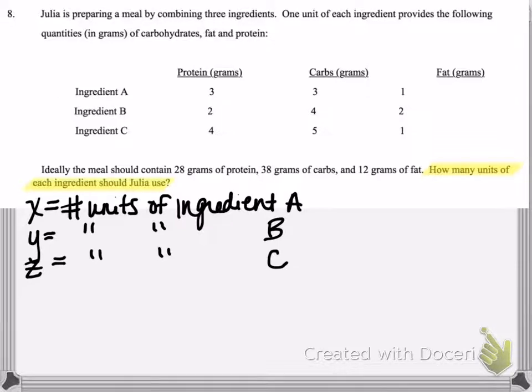So now you want to read it again and try to identify the relationship between the variables. If you take a look at the table, we know that ingredient A contains some protein, some carbs, and some fat. Same with B and same with C. Below you'll see that ideally we want our meal to contain 28 grams of protein.